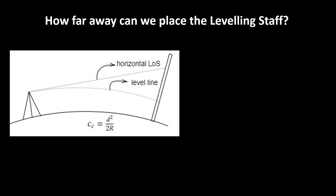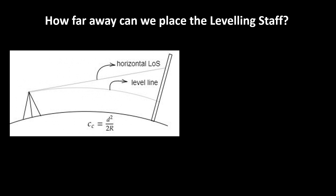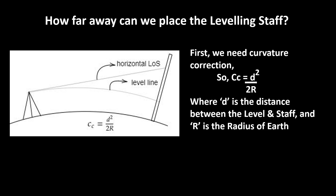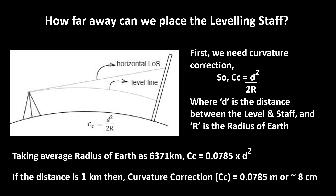So now the question is: how far away can we do the measurement? As far away as we can actually read the leveling staff. But if you plan to do a single shot, then we need to apply some correction. First, we need to apply earth curvature correction, which is d² divided by 2r, where d is the distance and r is the radius of the earth. The average radius of earth is 6,371 km, so the curvature correction will be 0.0785 multiplied by d².